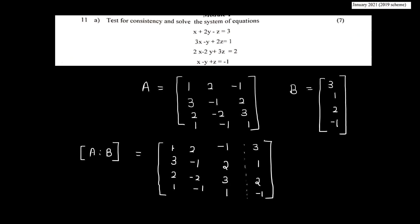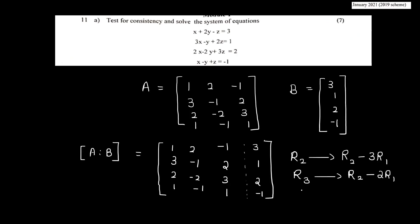We need the first element of the second, third, and fourth rows to be zero. For R2, the first element is 3, so we apply R2 minus 3R1. For R3, the first element is 2, so we apply R3 minus 2R1. For R4, we apply R4 minus R1.